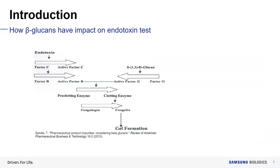Beta-glucans can result in a false positive reaction in endotoxin testing because the final reactions of the endotoxin and beta-glucan signaling pathways in LAL are the same. Although false positive reactions do not impact patient safety or change the regulatory perspective, they could financially impact manufacturers through quality record investigations and product rejections, and may also impact drug supply. Therefore, false positive reactions should be prevented.